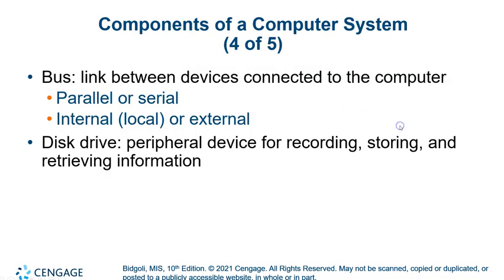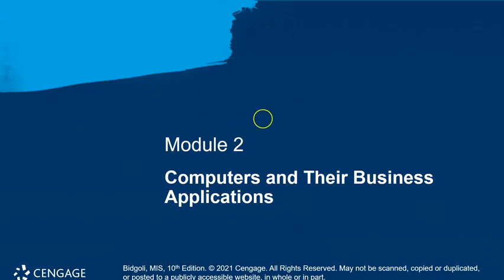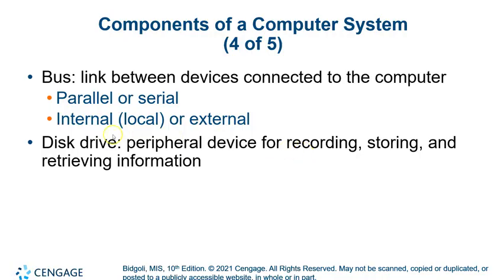The path along which data travels is called a bus. A bus is the path data takes — for example, from the control unit down to main memory and back. The bigger and wider the path, the more data can travel — it's like lanes on a road. The more lanes, the more traffic can travel at once.